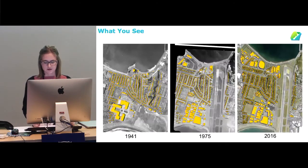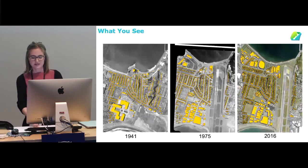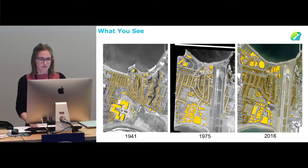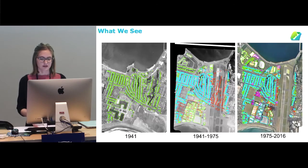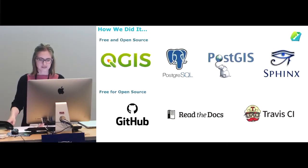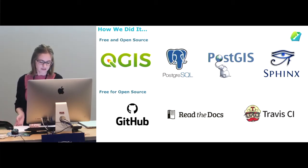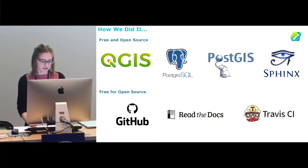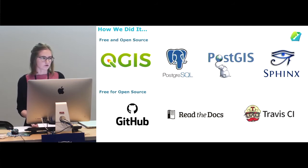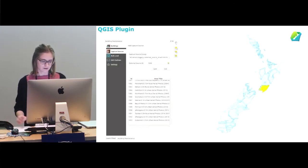This shows what you see if you just look at the data at face value, but through developing our own tools and using open source software we're able to generate an image with a lot more richness. On the technical side, we developed a plugin using QGIS and manage our data in a database using PostgreSQL and PostGIS. Using Sphinx and Read the Docs we've published a data dictionary and all our documentation, and all our code is stored on GitHub. For automatic testing we use Travis CI.